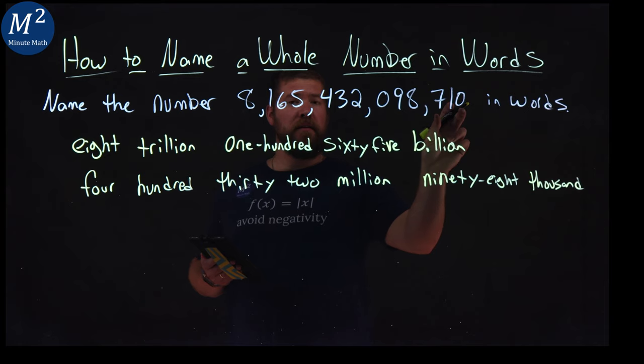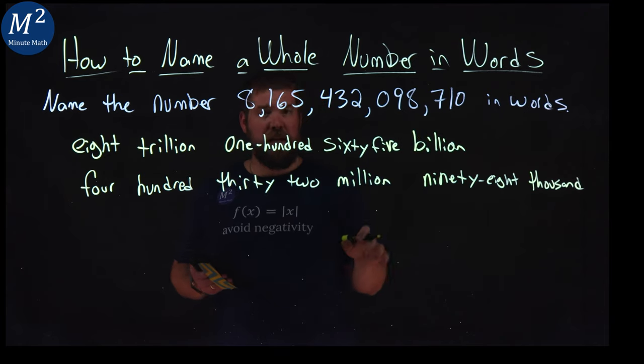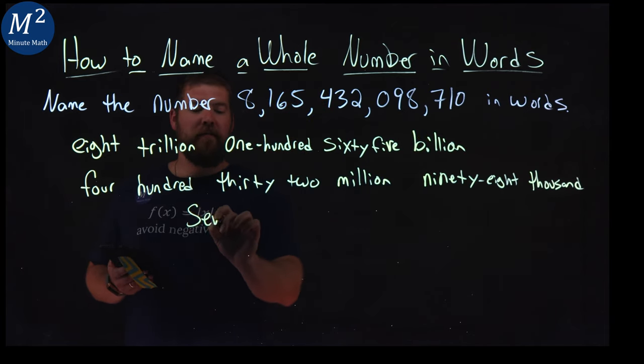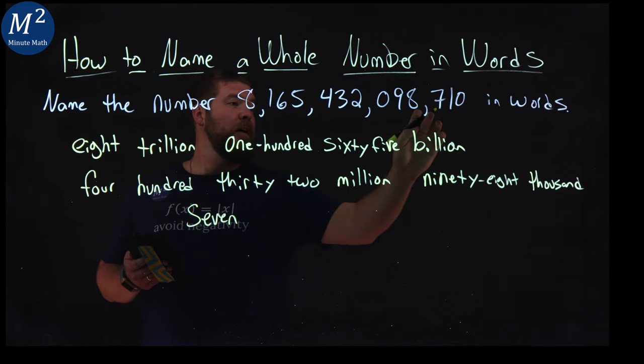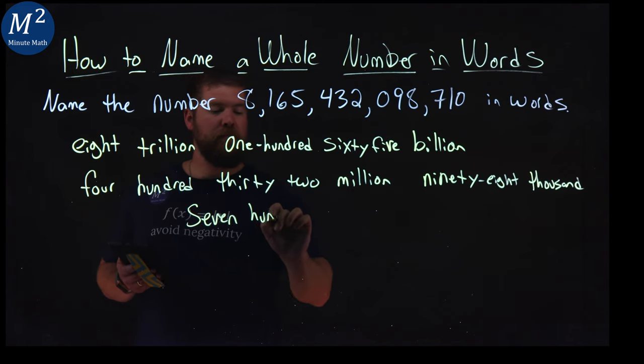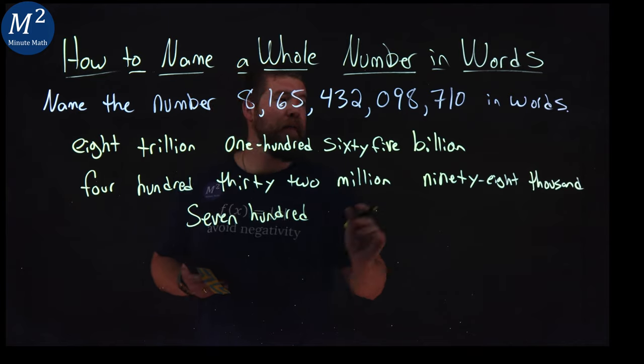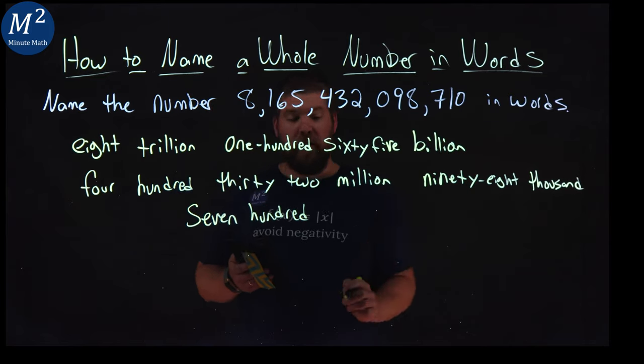And then lastly here, we're in the basic numbers. We would call that seven in the hundred. And then we have one zero at the end, which we call 10.